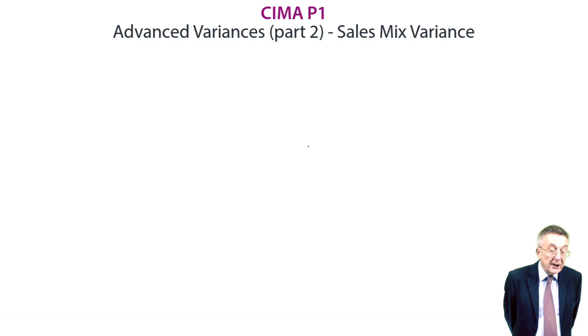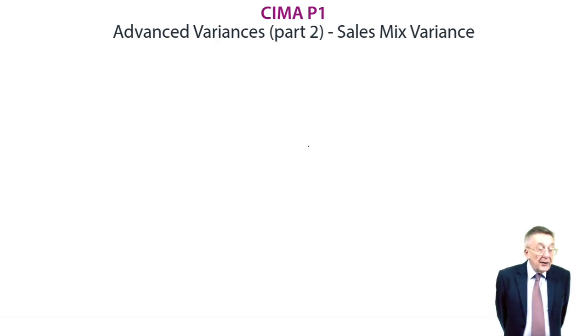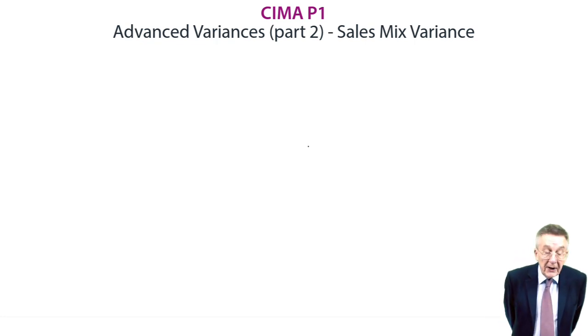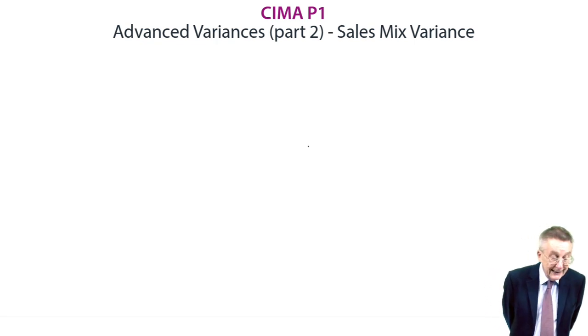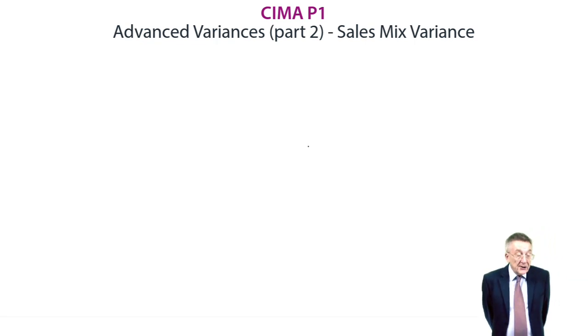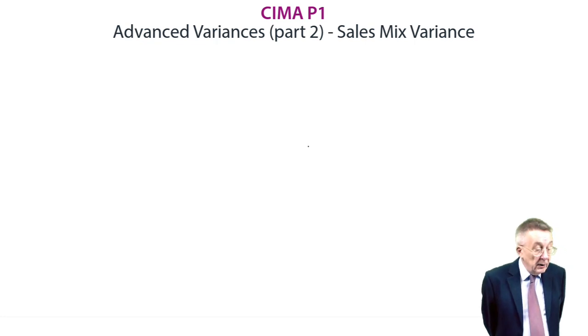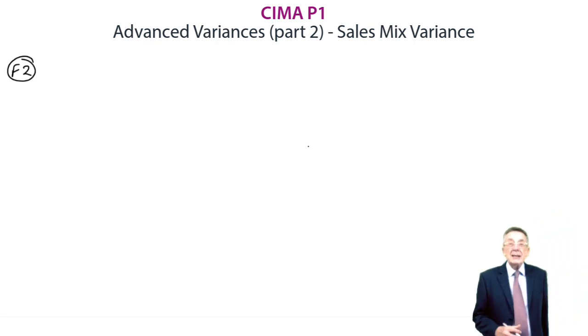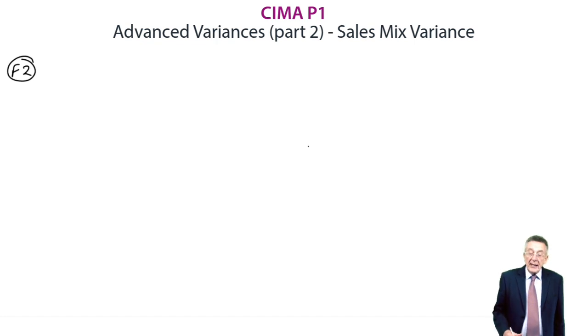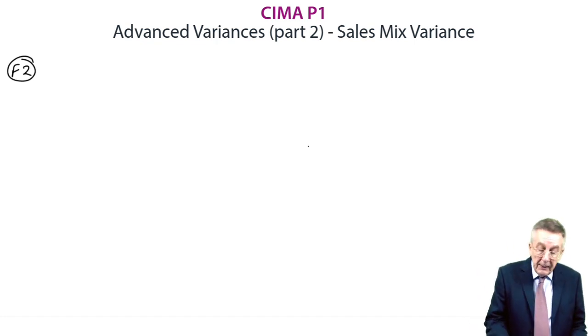Olga sells three products, A, B and C. The following table shows the budget and actual results for these products. You've got there your budget sales for each of them, the standard price per unit for each of them, and the standard cost per unit. The second table shows the actual sales, the actual price and cost per unit. And we want the variances. What I'll do, let's do it first as though it's paper F2, and then I'll explain why.